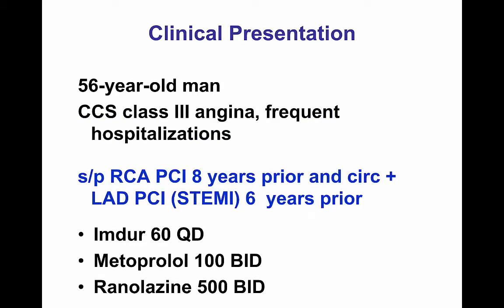This was a 56-year-old patient with severe Class 3 angina and frequent hospitalizations despite a good medical regimen with nitrates, beta-blockers, and ranolazine. He had undergone PCI of the right coronary artery 8 years prior to presentation, and also PCI of the circumflex and the LAD for a STEMI 6 years before.